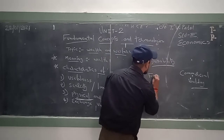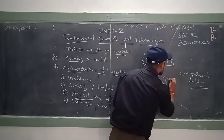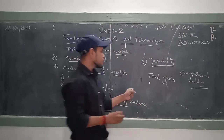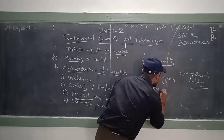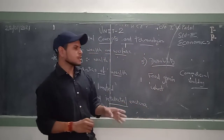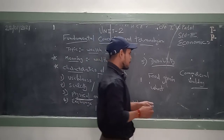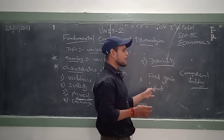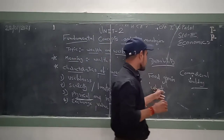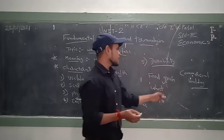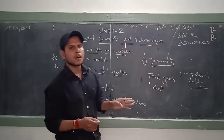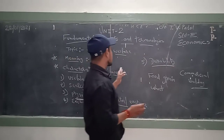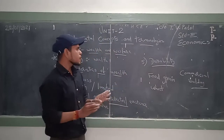On the other hand, food grains such as wheat are not long-lasting — they get perished after one to two years and are hardly useful for more than one year. On the other hand, buildings and machinery can be used for longer periods of time. So these are the five characteristics of wealth.